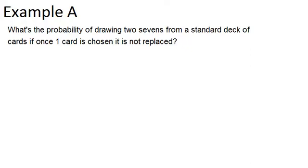So in this case, we have two events, we're drawing two cards, and we're thinking about what's the probability that we get two sevens.